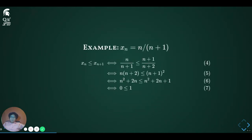Here's another example. Suppose the sequence is n over n+1. This turns out to be an increasing sequence. We can prove this by first plugging in the expression to see that it is sufficient to prove n over (n+1) is less than or equal to (n+1) over (n+2). Since n is natural and n+1 and n+2 are both positive, we can cross multiply to get that the inequality is the same as n times (n+2) being less than or equal to (n+1) squared. A little algebraic manipulation expanding the product shows that we can again reduce this to 0 less than 1, which we know is true.